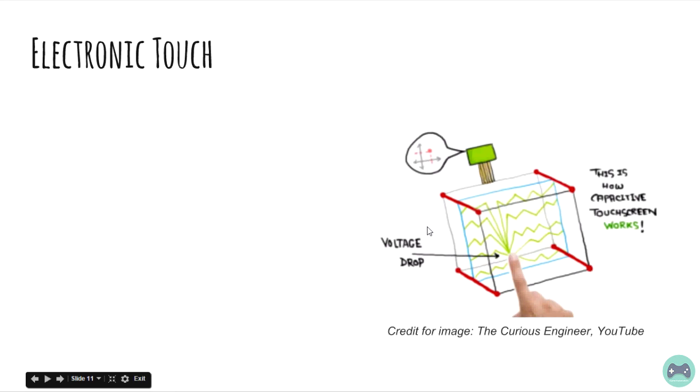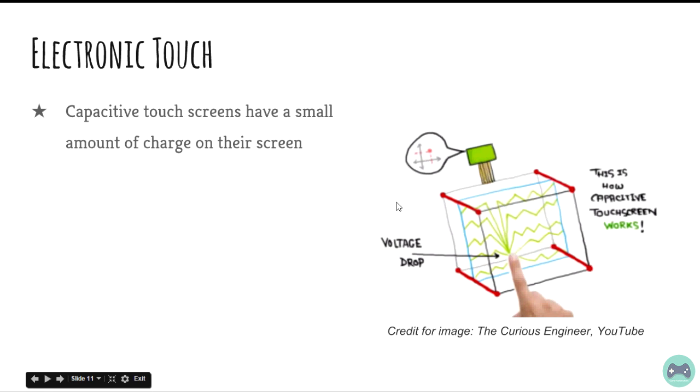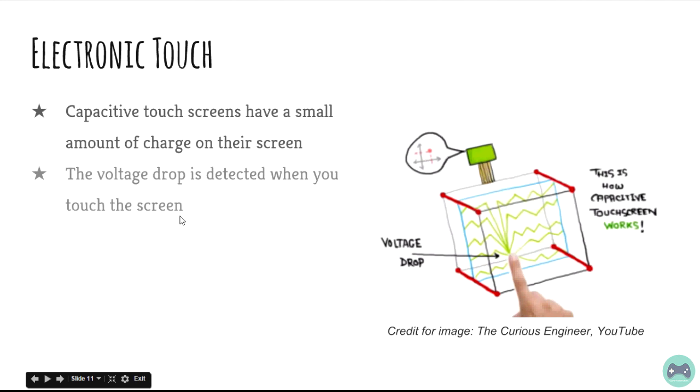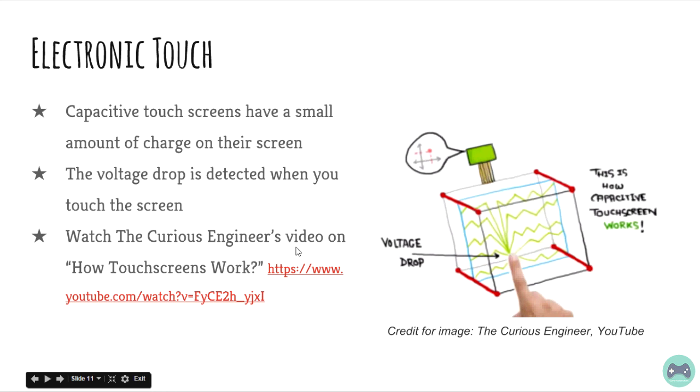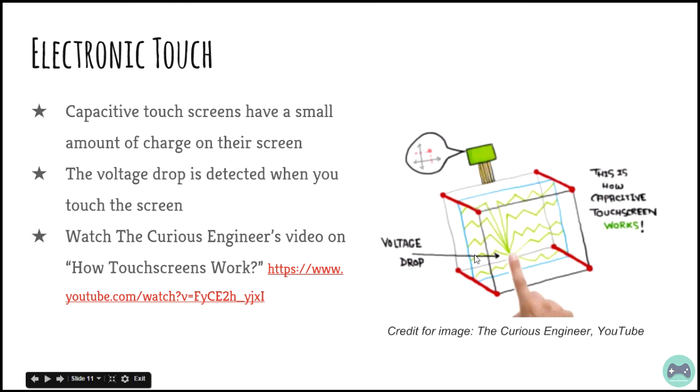An alternative to mechanical touch is electronic touch. It works on the concept of the capacitive screen. Capacitive touchscreens have a small amount of charge on the screen. When you touch it, you have a voltage drop. The voltage drop is detected when you touch the screen and depending on it, your location is tracked. Watch the curious engineer's video on how touchscreens work to understand more about this setup.